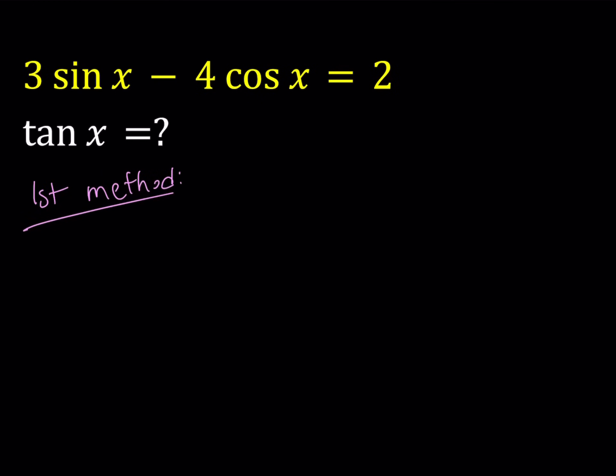Now the first method involves squaring both sides. Let's go ahead and do that. This gives us 9 sine squared x minus 24 sine x cosine x plus 16 cosine squared x equals 4.